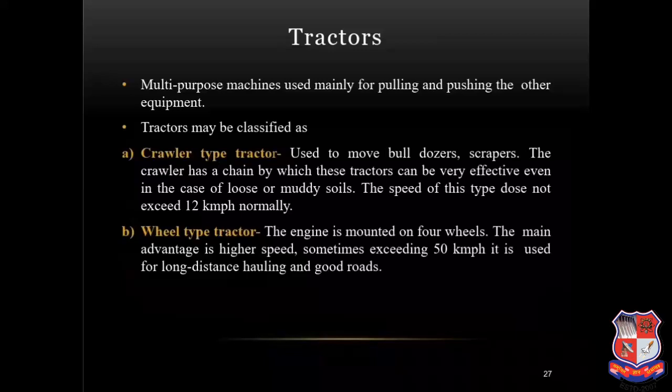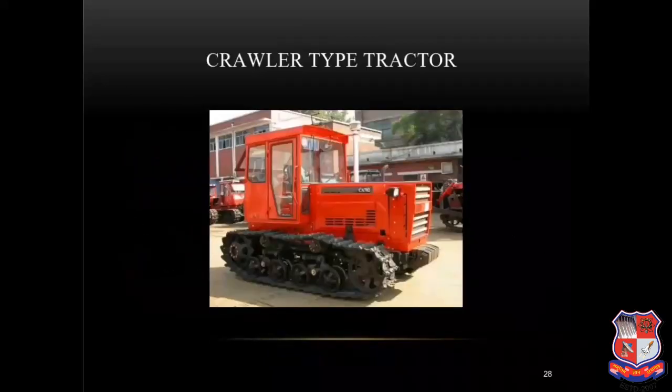Tractors are multi-purpose machines used mainly for pulling and pushing other arterial equipment. They are mainly classified in two categories: crawler type and wheel type. In crawler type, the tractor is used to move bulldozers and scrapers. The crawler has a chain by which the tractor can be very effective even in the case of loose or muddy soil. The speed of this type does not exceed 12 km per hour normally. In case of wheel type tractor, the engine is mounted on four wheels, with a main advantage of higher speed, sometimes exceeding 50 km per hour, and it is used for long distance hauling on good roads.